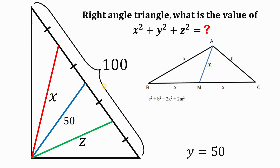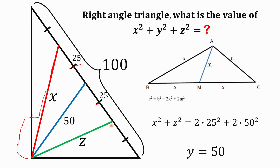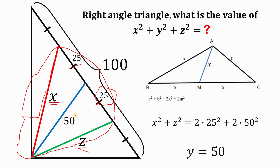Let's use the Apollonius theorem to answer this question. First, since the whole hypotenuse is 100, every segment along it must be equal to 25 units. Applying the Apollonius theorem to this triangle, we get: x squared plus z squared equals 2 times 25 squared plus 2 times 50 squared.